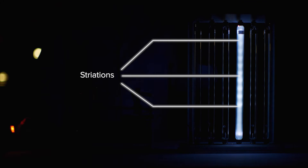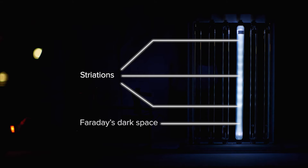In this medium pressure tube, we can see that the glow is now clearly separated into bright and dark regions called striations. We can also see Faraday's dark space closer to the cathode. Again, electrons colliding with the gas molecules in the discharge tube cause the glowing.